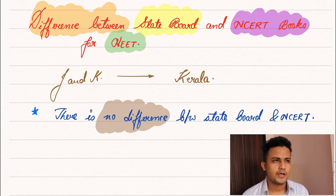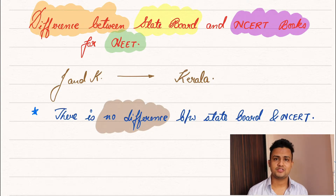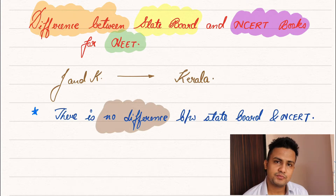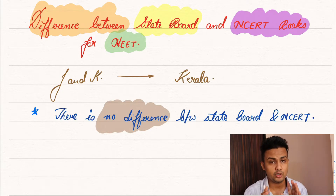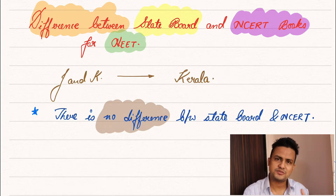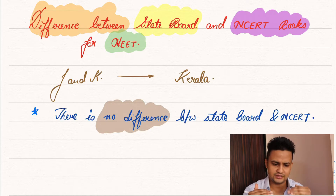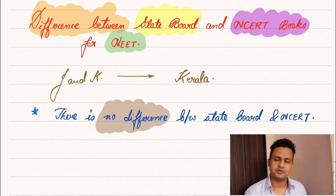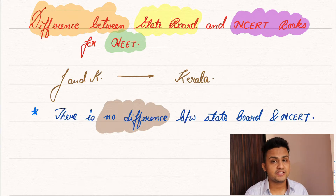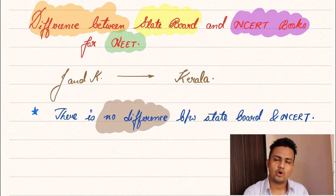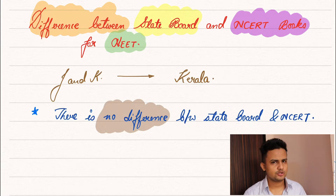There is a difference in the depth of chapters, but the syllabus remains the same. In NCERT, chapters are explained in great depth and all concepts are made clear. The state board syllabus is reshuffled every few years so state board students can match up with NCERT and CBSE students. Some topics are more in-depth in NCERT, but in the NEET examination you don't need to write all the derivation parts, so you can skip that part.